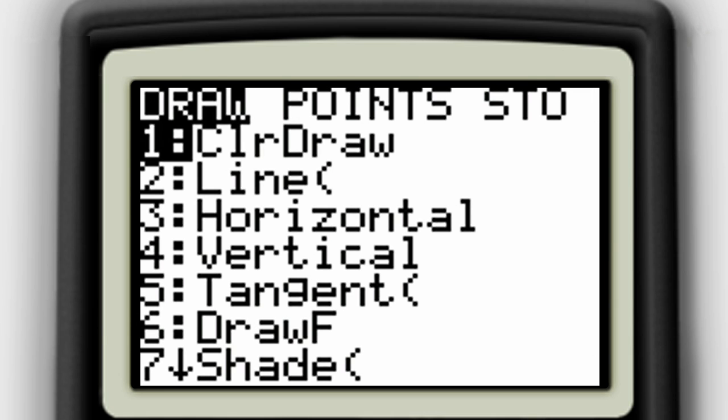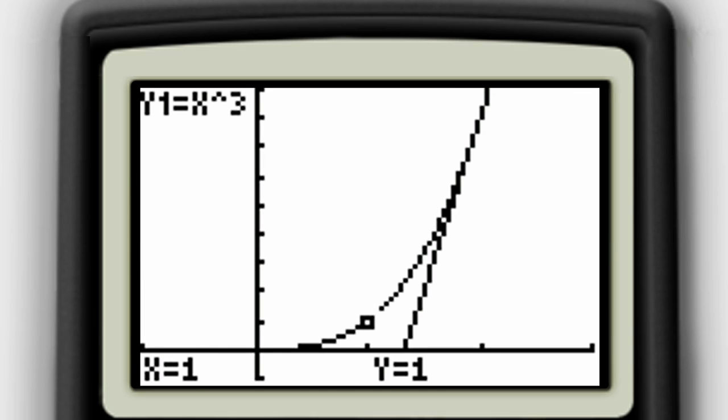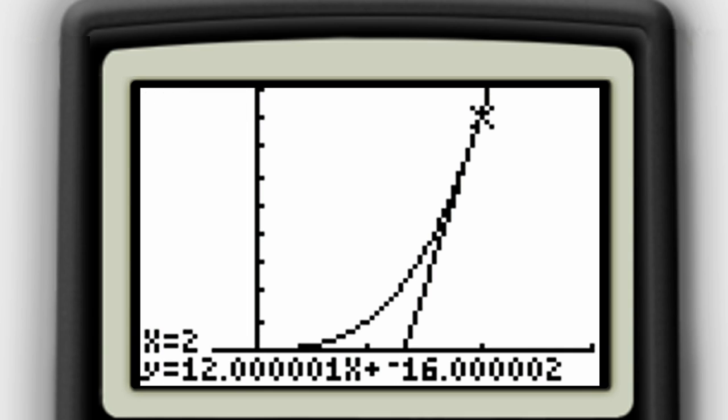Many graphing utilities also have a feature where you can draw in a tangent line. So if your utility has that feature, you can draw the tangent line at the point x equals 2. And when you do that, you notice that the tangent line is going right on top of, or being drawn right on top of 12x minus 16.